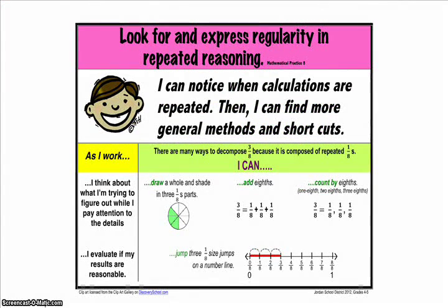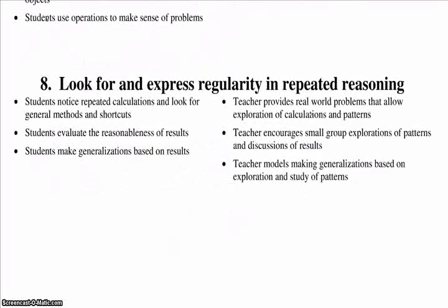Number eight: look for and express regularity in repeated reasoning. Mathematically proficient students notice if calculations are repeated and look for both general methods and for shortcuts. Upper elementary students might notice when dividing 25 by 11 that they are repeating the same calculations over and over again and conclude that they have a repeating decimal. By paying attention to the calculation of slope as they repeatedly check whether points are on the line through (1, 2) with a slope of 3, middle school students might abstract the equation (y minus 2) divided by (x minus 1) equals 3. Noticing the regularity in the way terms cancel when expanding might lead them to the general formula for the sum of a geometric series. As they work to solve a problem, mathematically proficient students maintain oversight of the process while attending to the details. They continually evaluate the reasonableness of their intermediate results.